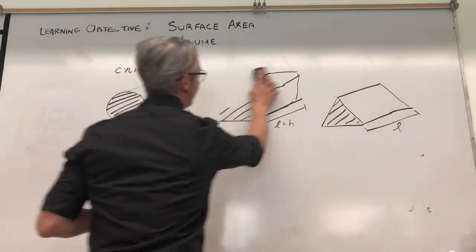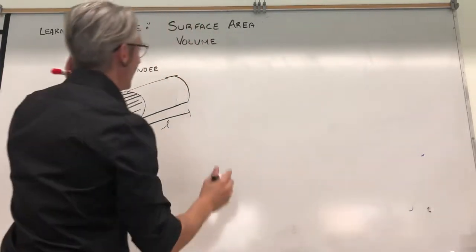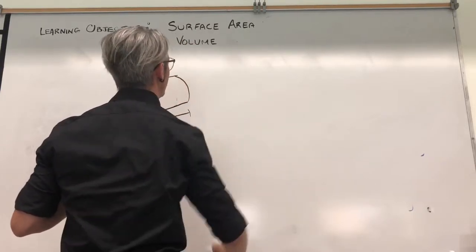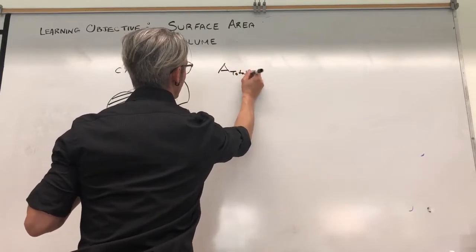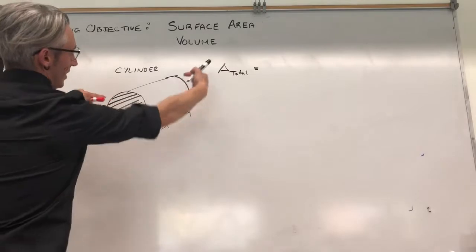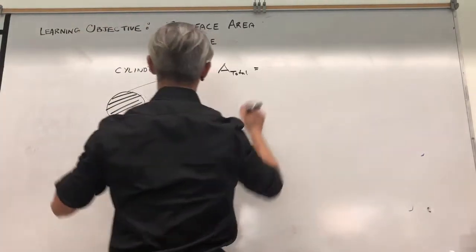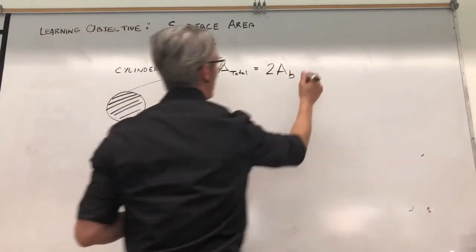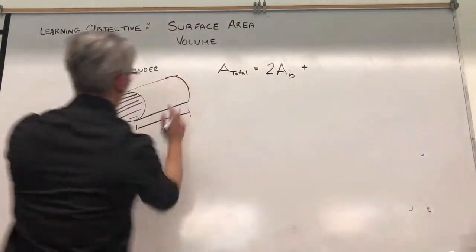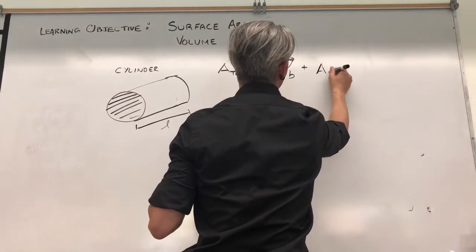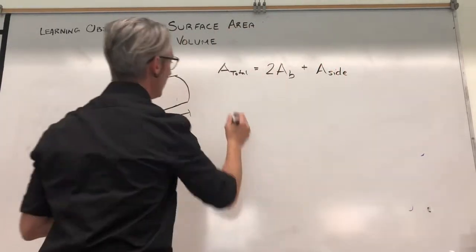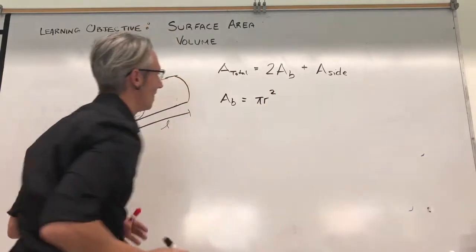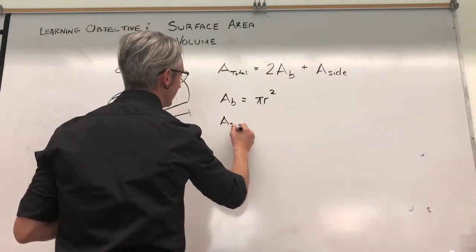Let's start with a cylinder. The total area of a cylinder is going to be equal to the area of the two faces — these are called the base — so it's two times the area of one base, because the front circle equals the back circle, plus the area of what wraps around — the area of the side. The area of the base is simply the area of the circle, which we know is πr².